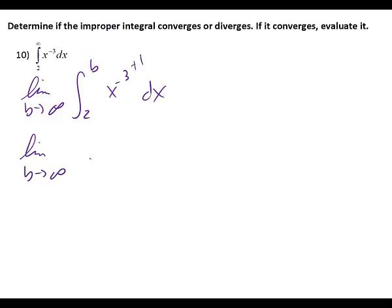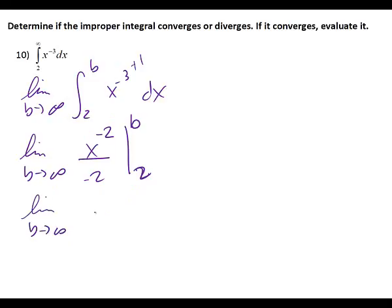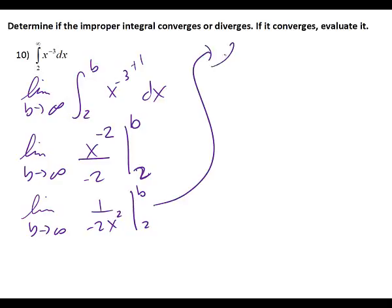When I integrate, what do I get? X to the negative second over negative two from 2 to B. I'm going to rewrite this — I'm not going to sub in until I get that exponent moved downstairs. So one over negative two x squared from 2 to B. What are we going to do now? Plug in the B and the 2.